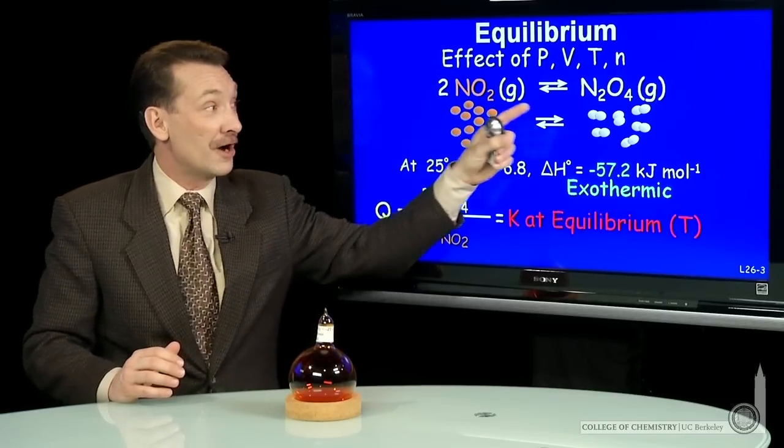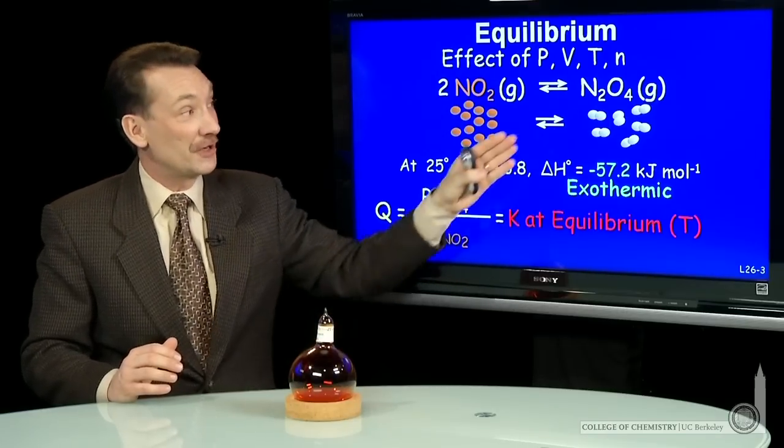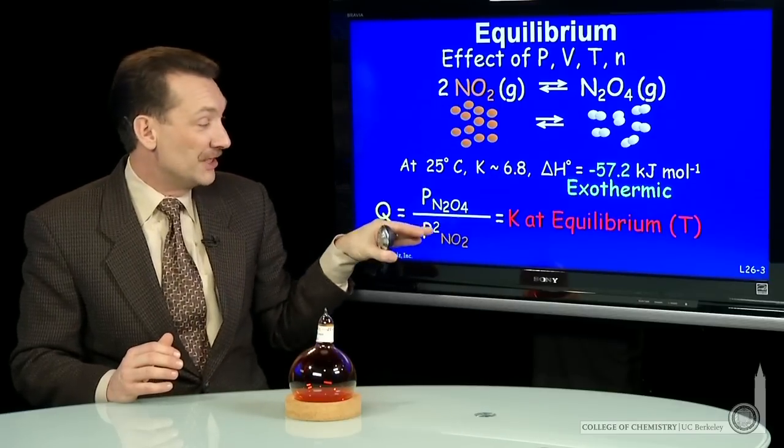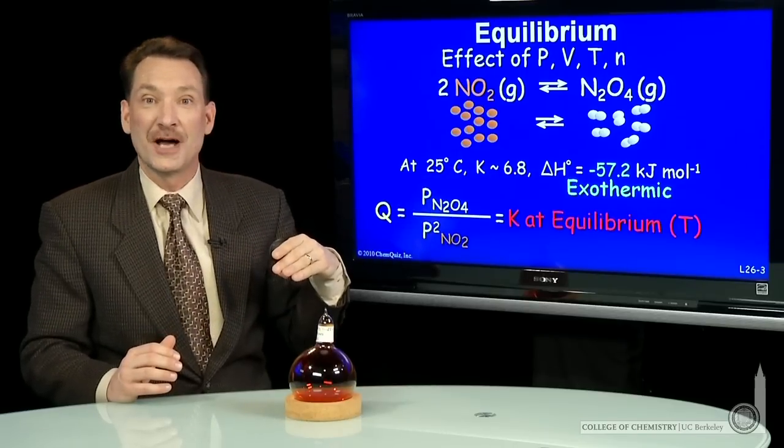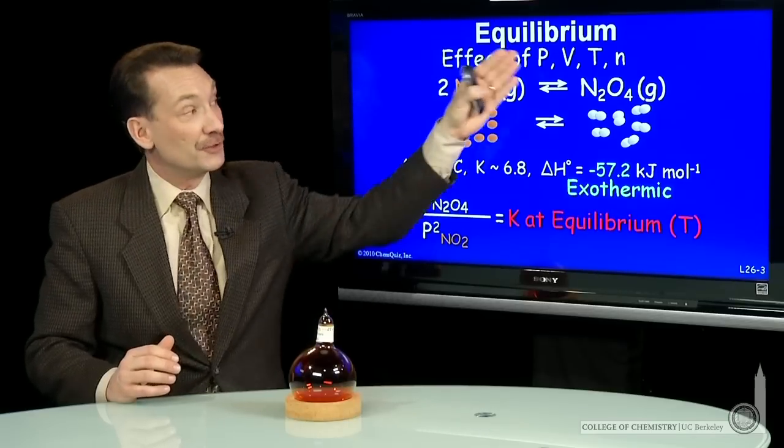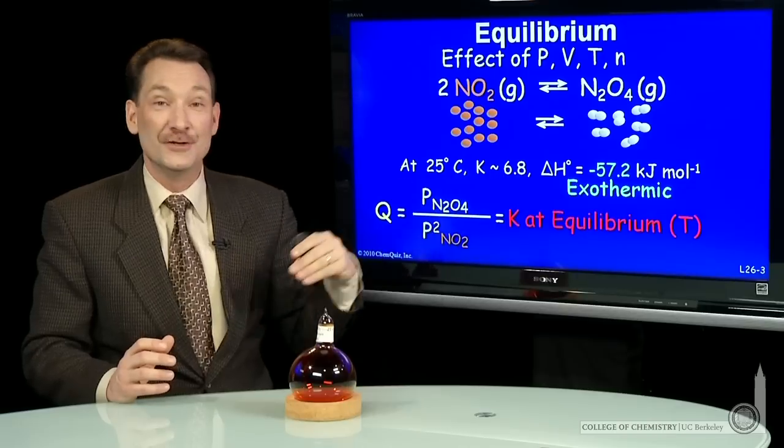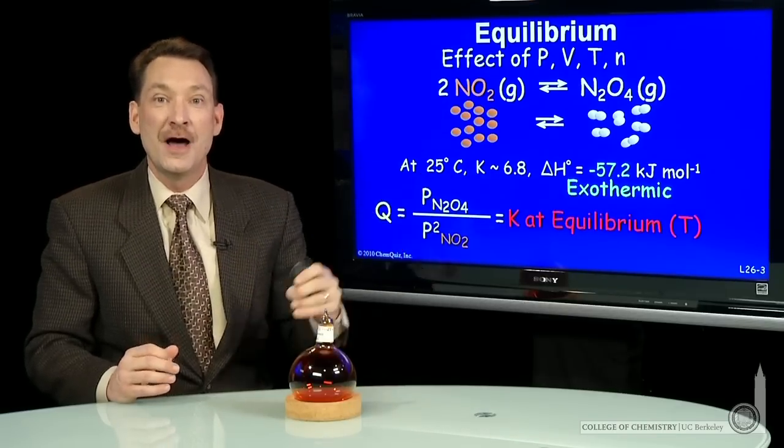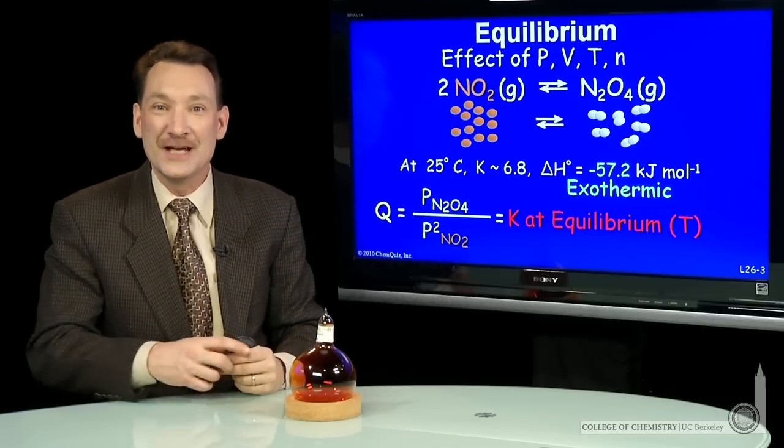And remember, regardless of the starting conditions, I'll achieve this K. So I could start with all N2O4, and I would reach an equilibrium where I'd produce some NO2, such that the equilibrium constant would be 6.8. Or I could start with all NO2, and I'd produce some N2O4, such that this ratio at 25 degrees continues to be 6.8. That's the nature of equilibrium, a balance between free energy and a constant value we call the equilibrium constant.